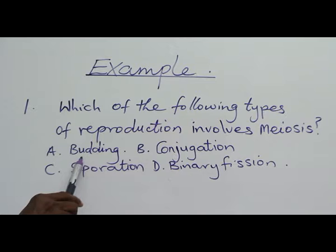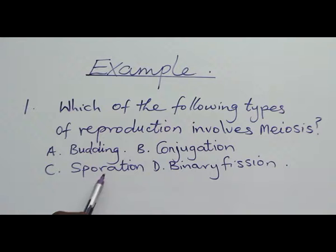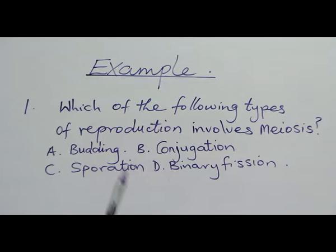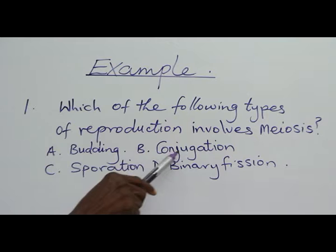Budding, as we find in yeast, involves the development of buds which fall off and become an individual. Binary fission, as we see in some protozoa like amoeba, is when the cell divides into two. But in the case of conjugation, it involves formation of gametes and exchange of gametes, as we see in Paramecium and related organisms. Therefore, this is a sexual reproductive method.